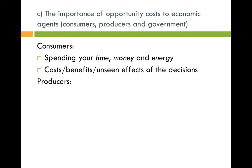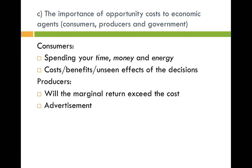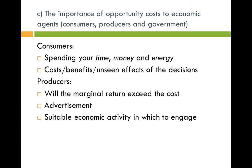Producers face opportunity costs too. They need to consider whether the cost of producing and selling an additional unit of output will exceed the extra marginal return they receive from selling it — so whether it's actually worth producing a good and which good is best for the current market. They also need to consider advertising: where to place it, whether to direct it at older or younger people. And they must consider what economic activity to engage in — whether the demand is there to meet their supply.